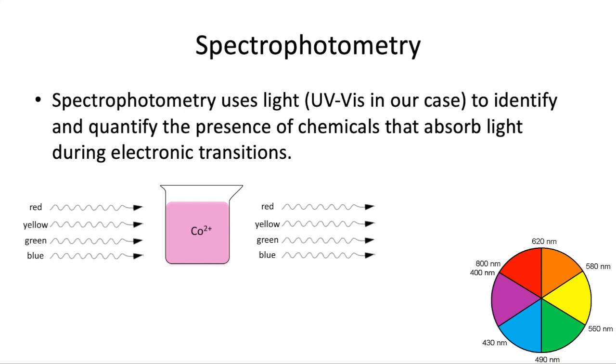So our experiment today, we're going to be using spectrophotometry. And in this case, we're using UV or visible light to identify and quantify chemicals that absorb light during electronic transitions. And this is one of the solutions that we'll be using in lab. It's a cobalt 2 plus solution, cobalt nitrate. And it appears a really pretty pink color. So if it's appearing pink, we'll call that red.